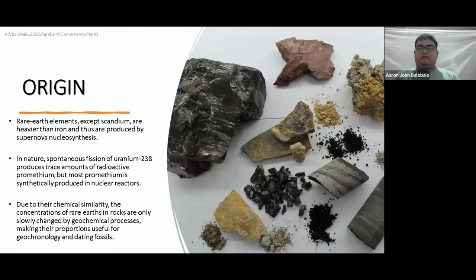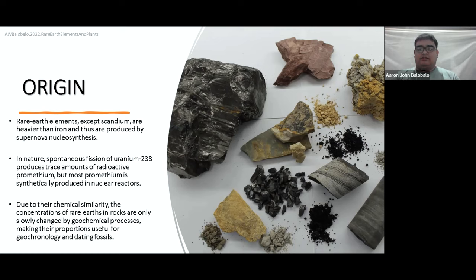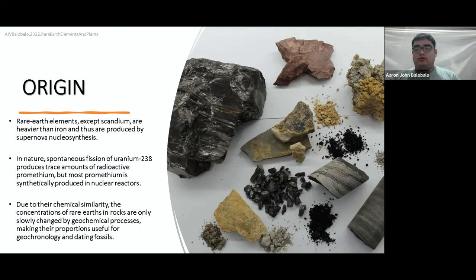What is the origin of rare earth elements? Rare earth elements, except scandium, are heavier than iron and thus are produced by supernova nucleosynthesis. In nature, spontaneous fission of uranium-238 produces some trace amounts of radioactive promethium, but most promethium is synthetically produced in nuclear reactors. Due to their chemical similarities, the concentration of rare earths in rocks is only slowly changed by geochemical processes, making their proportions useful for geochronology and dating fossils.